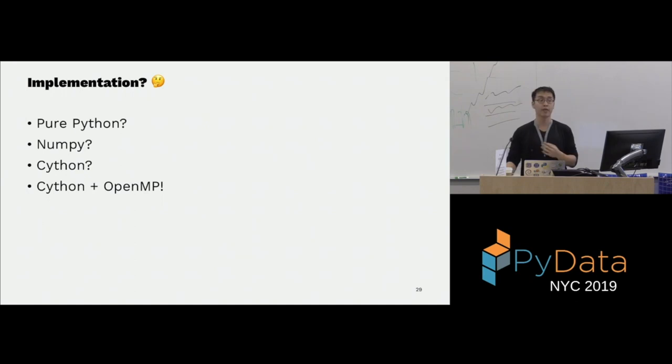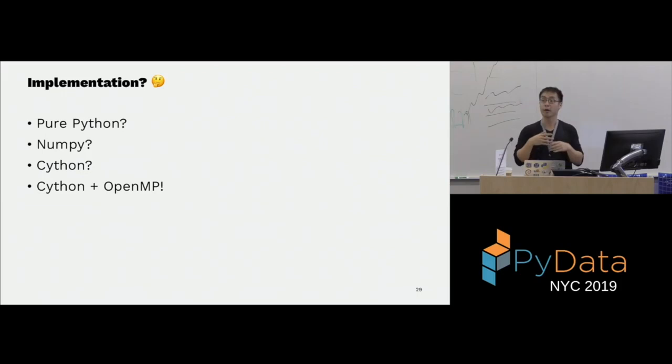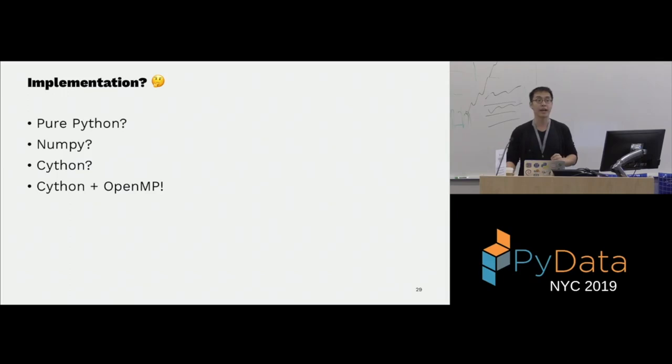Pure Python would be awfully slow because most of this is procedural code. We do use NumPy, but most NumPy speedups come from vectorized operations or linear algebra — and as you can see, there's barely any linear algebra here, just summing things procedurally. So we write it in Cython. With pure Cython it runs serially and is okay, but not as fast as competitors like LightGBM and XGBoost.